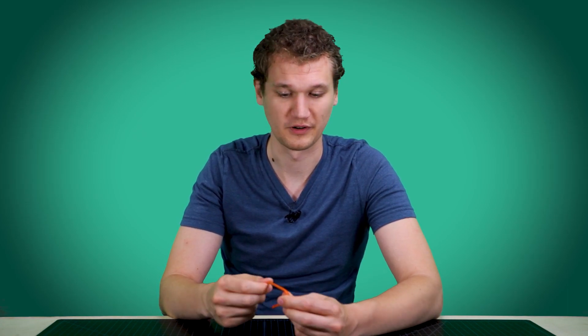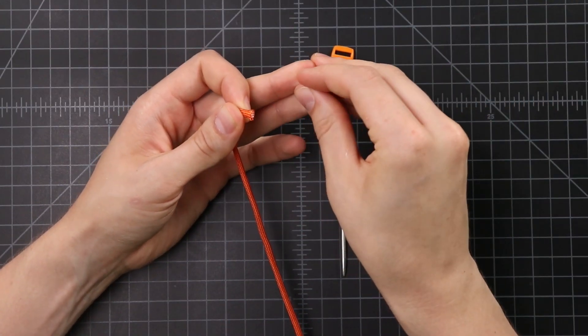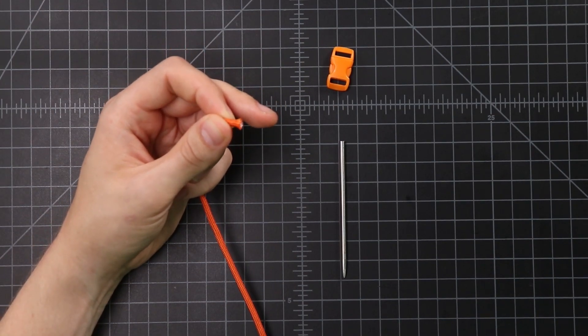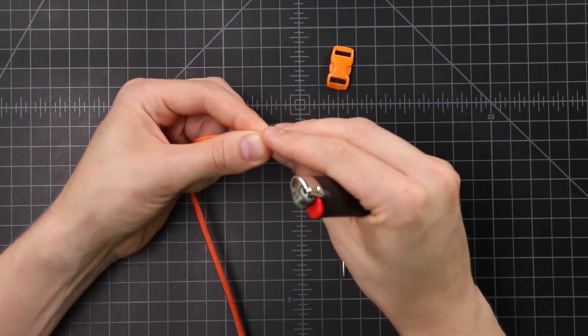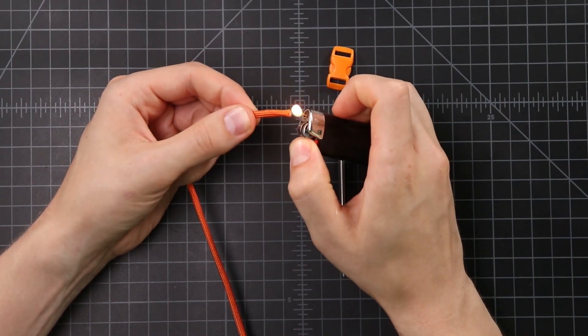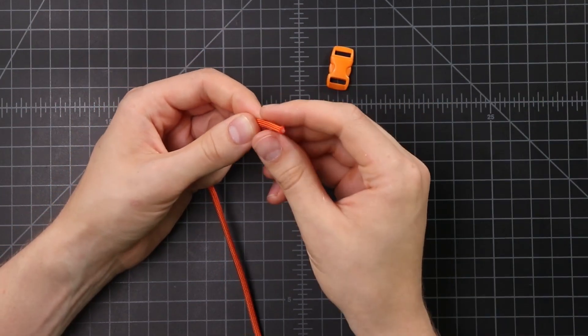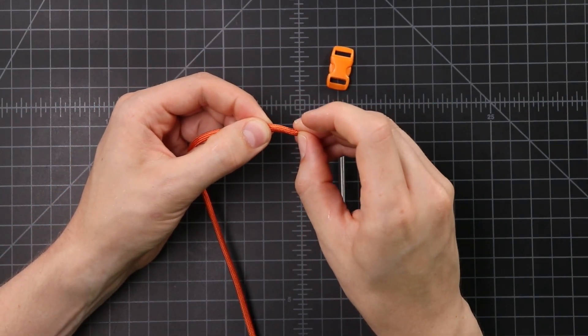We're going to be starting this bracelet a little bit different, because we're going to be attaching one end to the buckle, instead of two like we normally do, or attaching it with a cow hitch. So what we want to do is get a fresh end on our paracord, and if you want to give it a quick go with the lighter, you can just to keep it from fraying.